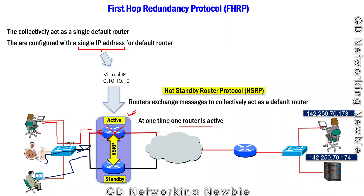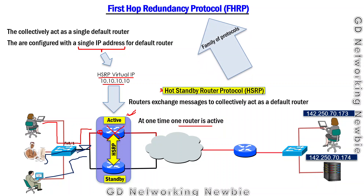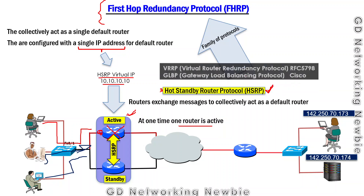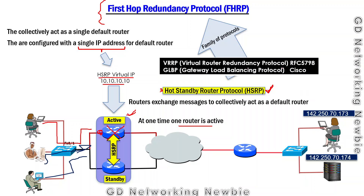The protocol used to manage this collection of routers is Hot Standby Router Protocol — HSRP. The virtual IP used becomes the HSRP virtual IP. HSRP is part of the First Hop Redundancy Protocol family. Other protocols in this family include Virtual Router Redundancy Protocol, which is an open standard, and Gateway Load Balancing Protocol — GLBP. Both HSRP and GLBP are Cisco proprietary protocols.